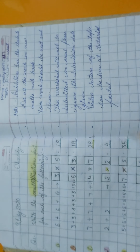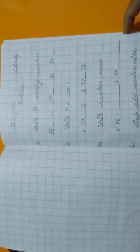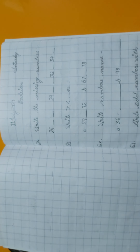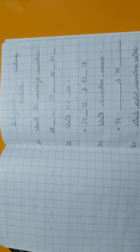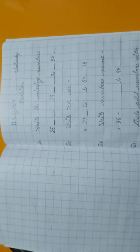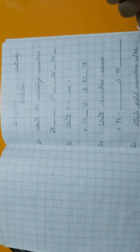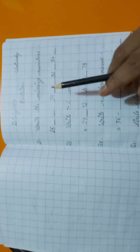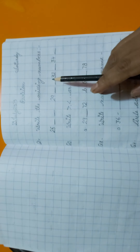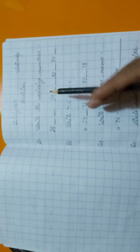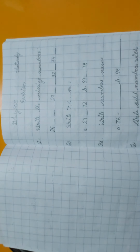So children, this is your revision worksheet. We have already done missing numbers in previous classes — from KG onwards we have been doing missing numbers. Missing numbers are those where some numbers in the sequence are not given and you have to complete them.